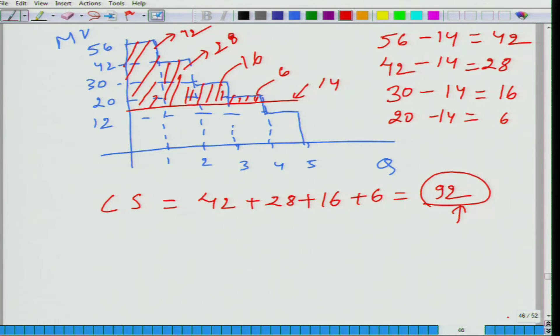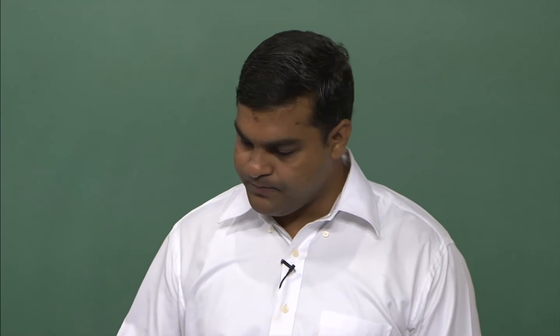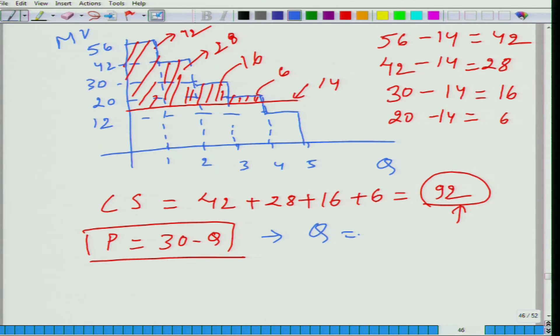Now, the demand curve here is a stepwise curve because the inherent assumption is that you can only buy integer numbers of bananas — 1, 2, 3, 4, 5. If we allow for a continuous function, we get a downward-sloping demand function. Let us take another example: let the demand function be given by P = 30 − Q. Is this a demand function or an inverse demand function? It is an inverse demand function, though in textbooks these terms are sometimes used interchangeably.